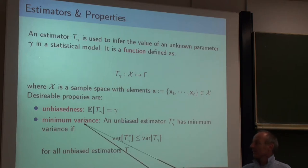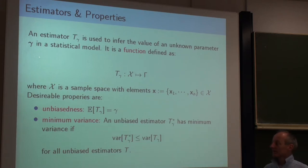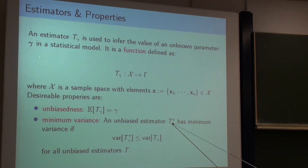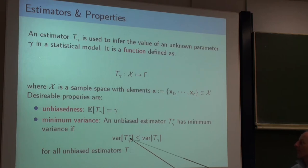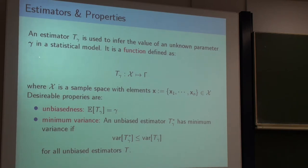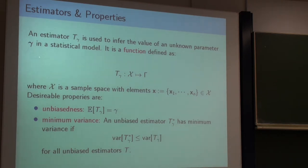Also, we would like to have the variance of our estimator to be as small as possible. Such an estimator T_gamma* has minimum variance if the variance of this estimator for the parameter gamma is less than or equal to the variance of any other unbiased estimator. From this point on, we talk about unbiased estimators and ask how large the variance is.